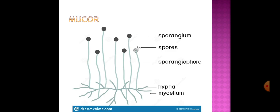The microscopic image of Mucor comprises sporangium, spores, sporangiophores, hyphae, and mycelium. Morphologically, Rhizopus and Mucor share similar structure, except in Rhizopus we come across rhizoids, whereas rhizoids are absent in Mucor.